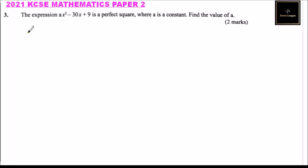Question number 3: The expression ax² - 30x + 9 is a perfect square, where a is a constant. Find the value of a.